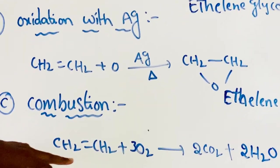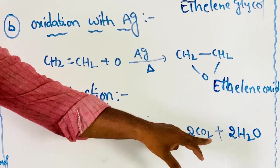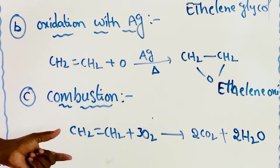Next, combustion. Alkenes completely combust with air to give carbon dioxide and water. These are the oxidation and combustion reactions.